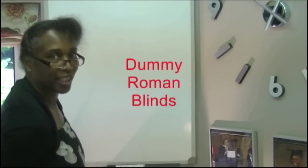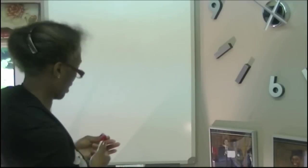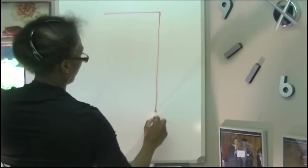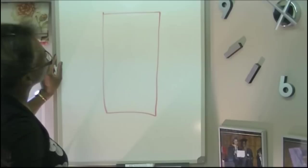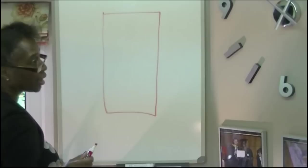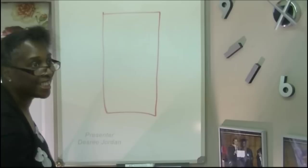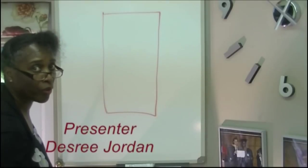Today's lesson is about a dummy Roman blind. Here we have our fabric. Now for the calculation for this Roman blind, because it's dummy we're going to use just over half the amount of fabric for the window.